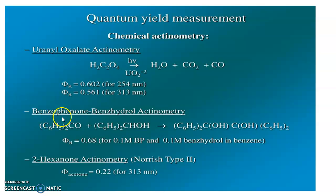Next example is benzophenone and benzhydrol actinometer. Here, in between two benzene rings there is a carbonyl group that is benzophenone and in between two benzene rings there is a CHOH that is hydroxyl group that is benzhydrol. It gives the product like this and the quantum yield is 0.68. Next one is 2-hexanone actinometer which undergoes Norrish type 2 reaction which has a quantum yield value 0.22 for 313 nanometer wavelength. These are examples of chemical actinometers.